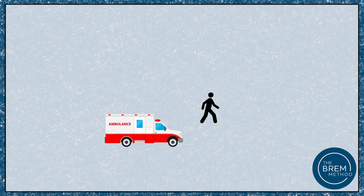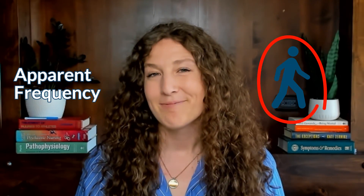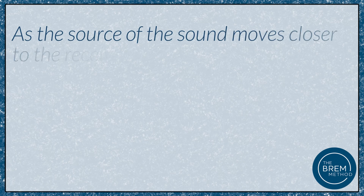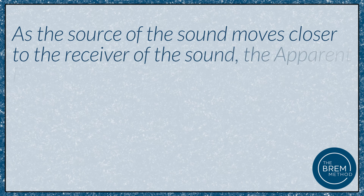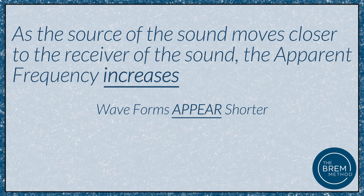This makes more sense with a real-life application. Say you're walking down the street heading east. You hear an ambulance coming up the street behind you wailing its siren — it's also heading east, but it's gaining on you. The apparent frequency of that siren according to you, the receiver, would be higher. As the source of the sound moves closer to the receiver, the apparent frequency increases — it feels like the waveforms are getting shorter or the pitch is getting higher, even though in actuality the frequency hasn't changed.